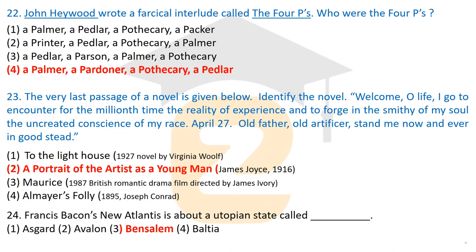Question twenty-two: John Heywood wrote a farcical interlude called 'The Four P's' — who were the four P's? This is a very important question, repeatedly asked in PGT level, state level English literature exams, and UGC NET. The correct answer is: a Palmer, a Pardoner, an Apothecary, and a Pedlar — these are the four P's in John Heywood's farcical interlude.